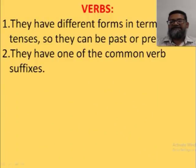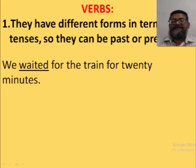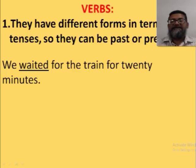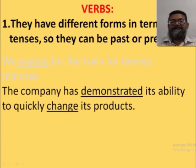Let's do verbs. The first way to identify a verb is that it has different forms in terms of tenses — it can be past or present. For example: 'We waited for the train for 20 minutes.' Waited is the past form of wait — only verbs have tenses. 'The company has demonstrated its ability to quickly change its products.' Demonstrated is the past form of demonstrate, and we can have changed — so both are verbs.